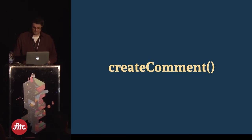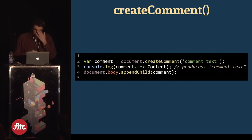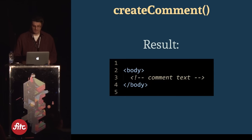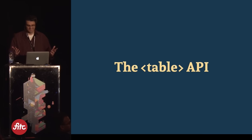Here's an interesting one that's probably not that useful but worth knowing: you can actually create an HTML comment using the createComment method. Three simple lines of JavaScript will add a comment to your HTML. You create the comment on line two, log out its text content to verify it was created, then append it to the body using appendChild. The HTML will then contain a comment produced on the fly.